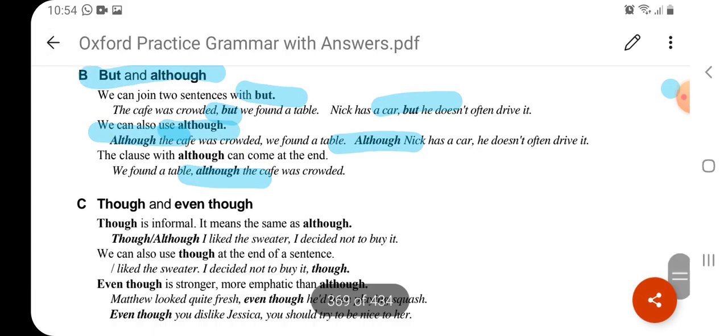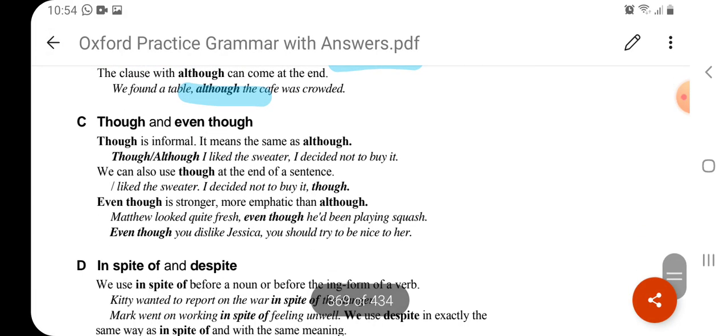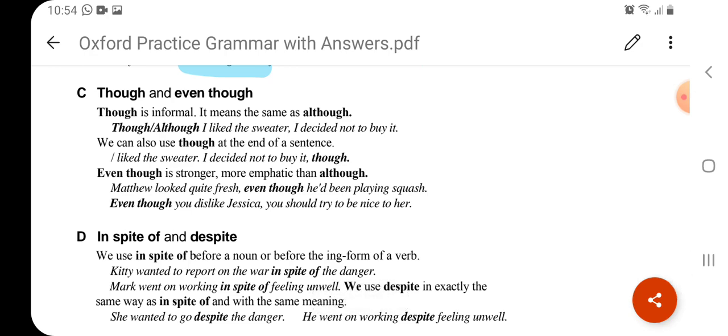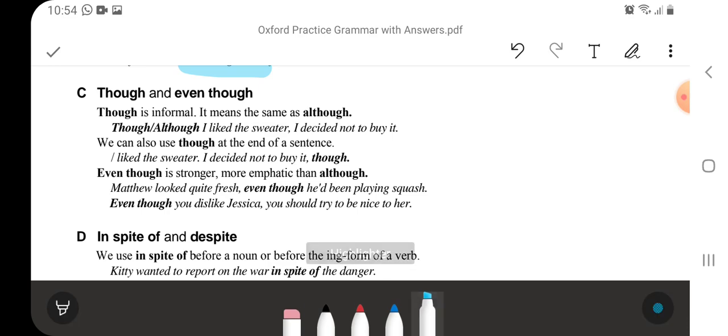Though and even though. Though is informal and it means the same as although. We have discussed the use of although, so though is a bit informal, it is used in more casual situations. Although is a little heavier word because it is used in formal situations. Though I like the sweater, I decided not to buy it. They can be used at the same place, but the difference is that though is a bit informal, used casually, and although is used in more formal situations when we have to follow the grammar very strictly.